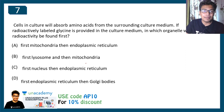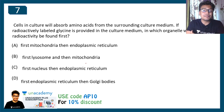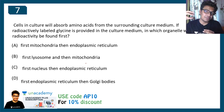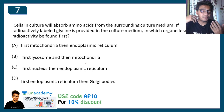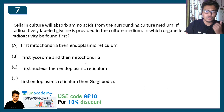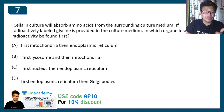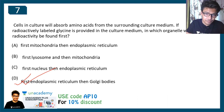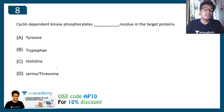Question seven: cells in culture will absorb amino acids from the surrounding culture medium. If radioactively labeled glycine is provided in the culture medium, in which organelle will you see the radioactivity first? This is a protein trafficking question. When you add amino acids, they get incorporated into proteins that are being translated. Translation happens on ribosomes in the endoplasmic reticulum, so you would first see the radioactivity in the endoplasmic reticulum, then in the Golgi body from where it is sorted or secreted. Option D is correct.